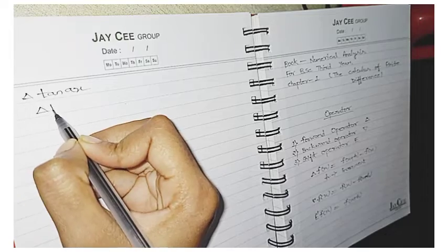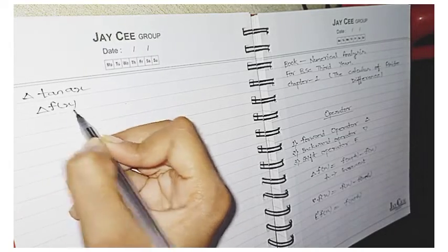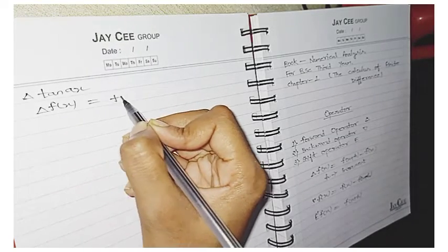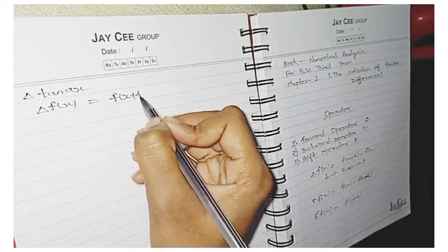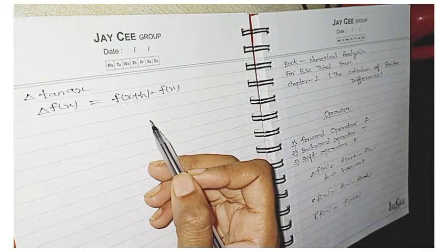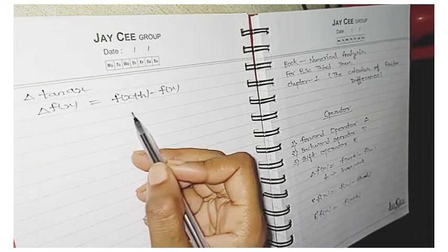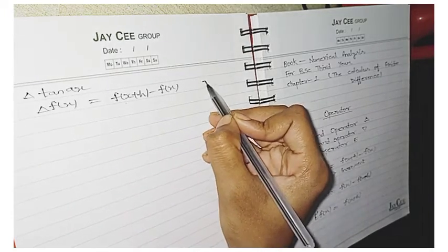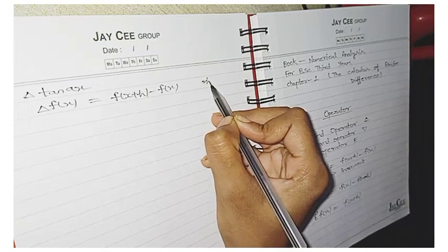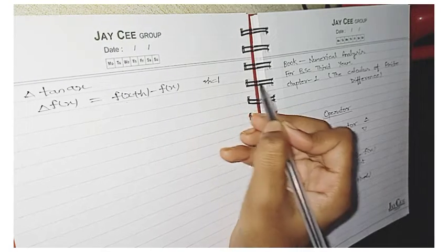So what is the formula of forward operator? Is this delta fx is equals to fx plus h minus fx. So many of the time you can take increment as according to your choice. So in this question, the increment x is equals to. We need to let h is equals to. Here we take 1 and solve this question.